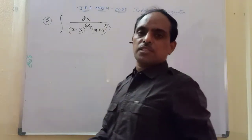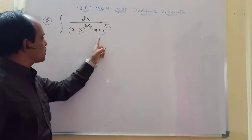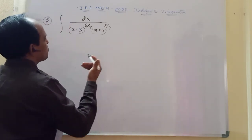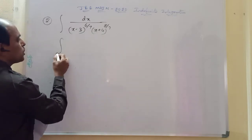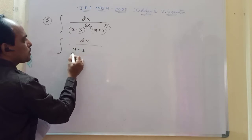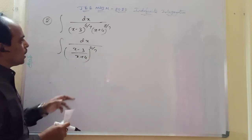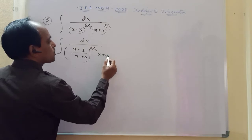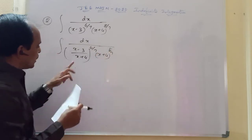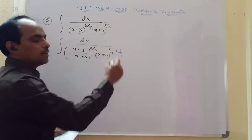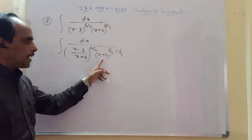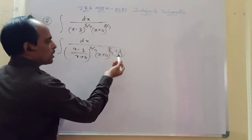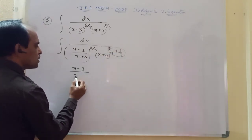The second question: integrate dx divided by (x − 3)^(6/7) · (x + 4)^(8/7). This is a standard model frequently asked in JEE. We multiply and divide by (x + 4)^(6/7) to rewrite the integrand, separating it into a ratio involving (x − 3)/(x + 4) raised to the power 6/7.